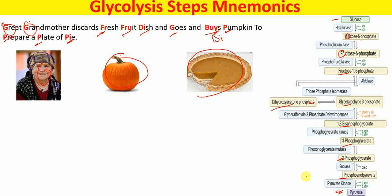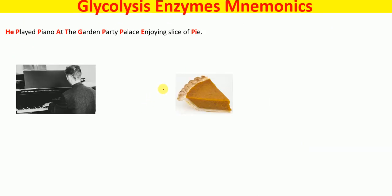When we say PI, it's like 'pi pi' — pyruvate. So: great grandmother discuss fresh fruit dish and goes and buys pumpkin to prepare a plate of pie. Now for the mnemonics to remember the enzymes involved in glycolysis — the word glycolysis consists of 10 letters, therefore there are 10 enzymes involved.